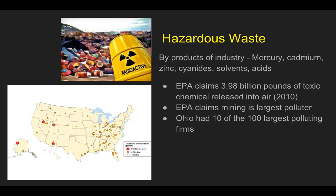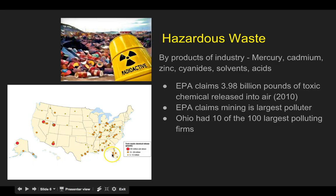Ohio had 10 of the 100 largest polluting firms — they're doing a lot of mining in Ohio. And if you look at the map, this is really interesting: if you're more towards the east coast, there are a lot more areas releasing toxic waste chemicals. Moving towards the west, it seems to be a lot less. But look at these huge depositories of toxic waste centers — you really don't want to be in southern Arizona or northern Nevada.